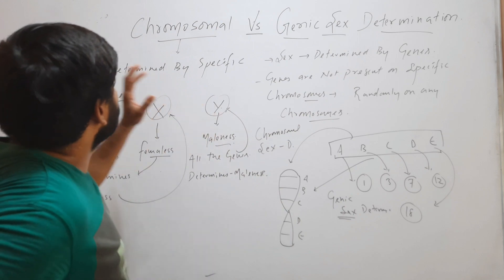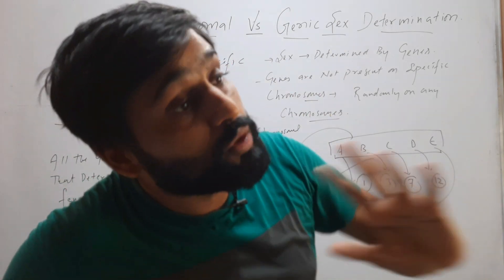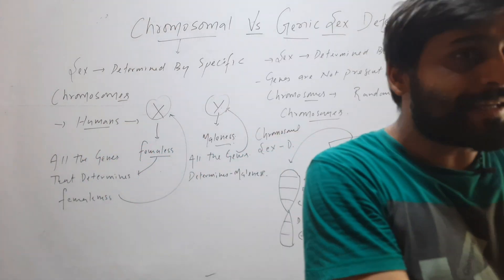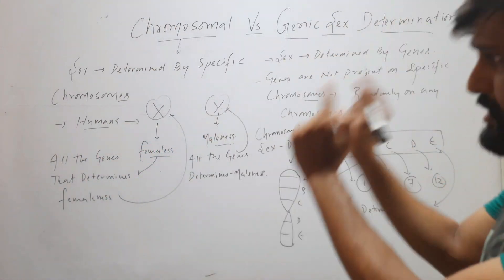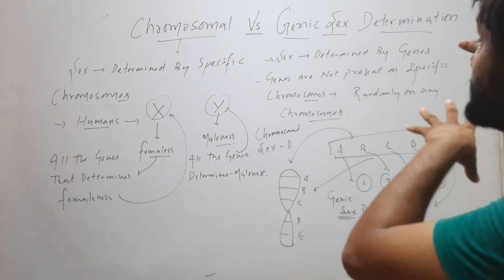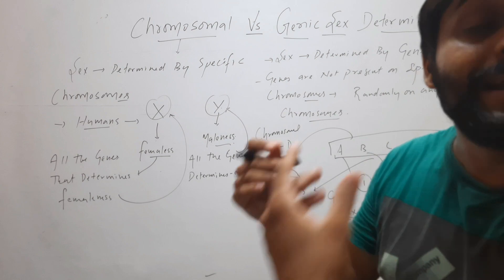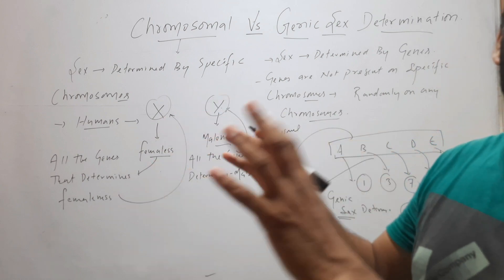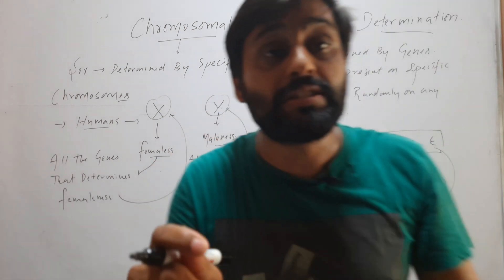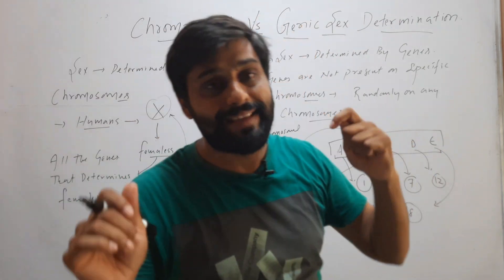This is the difference between chromosomal and genic sex determination. In case of chromosomal sex determination, all the genes that determine sex will be present on a specific chromosome. But in case of genic sex determination, they are present randomly on any chromosome — they will not be present on any specific chromosome. This is the difference between chromosomal and genic sex determination.